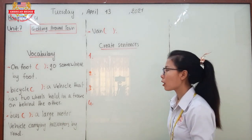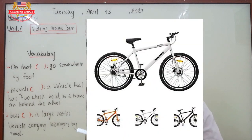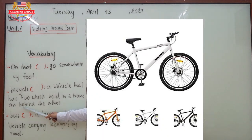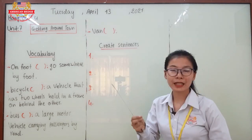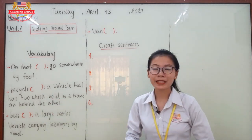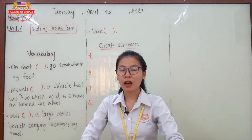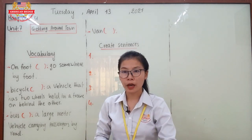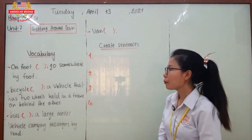Number two: bicycle. A bicycle refers to a vehicle that has two wheels, the same as a motorcycle. It has two wheels held in a frame, one behind the other. The difference is that a bicycle has pedals — you put your feet on the pedals and push them in order to move the wheels.